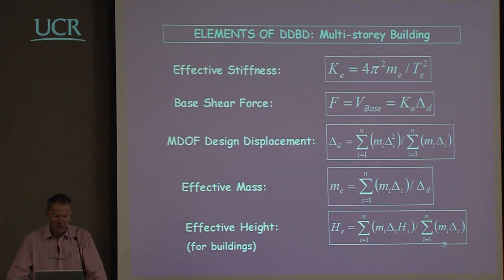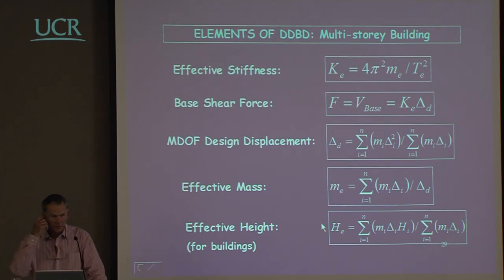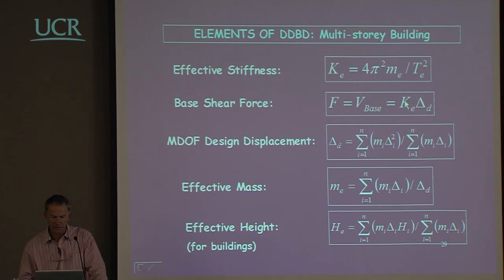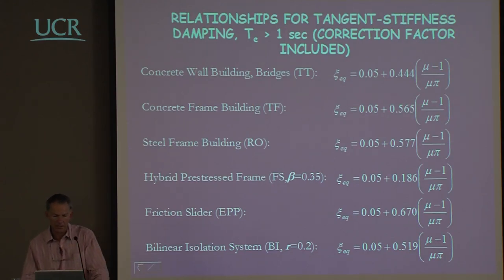The elements of displacement-based design are the same for buildings and bridges. We have an expression for effective stiffness, base shear force, design displacement, and effective mass. The only building-specific element is the effective height equation, which has no relevance for bridge design. From the design displacement and the ductility we get the damping. The information we have is sufficient for what we need to do.